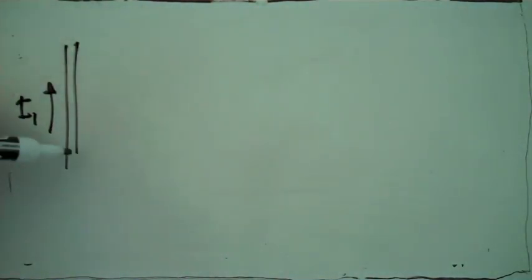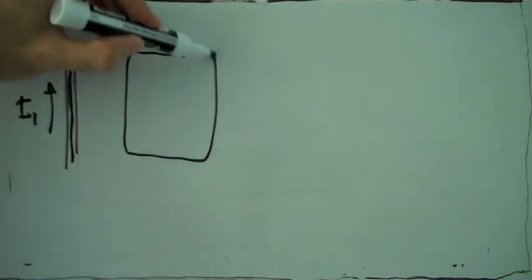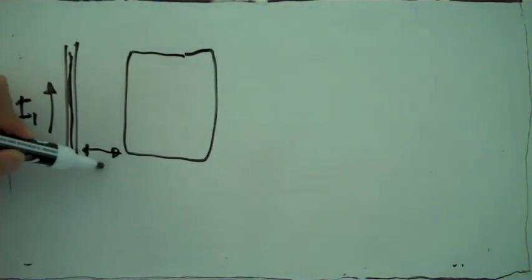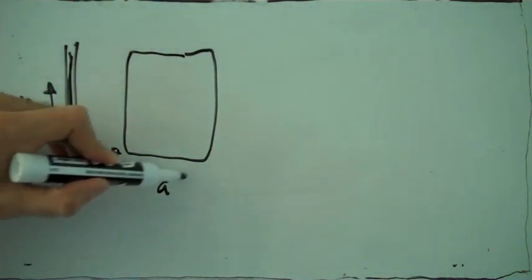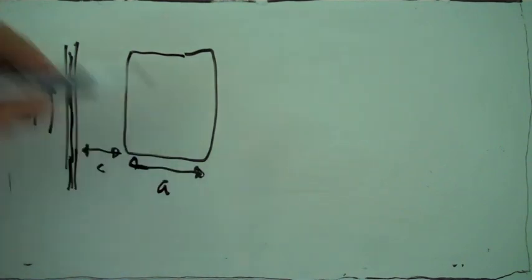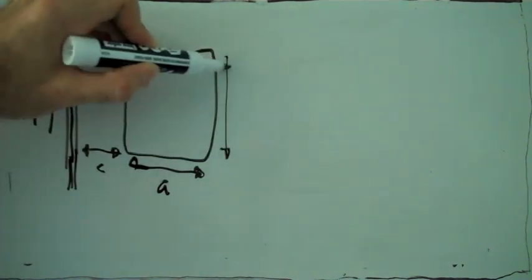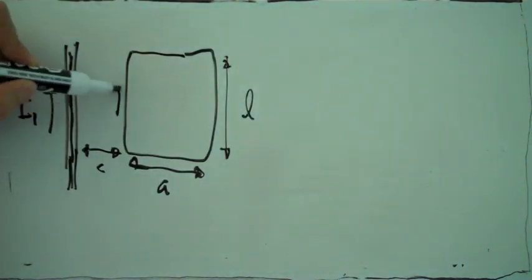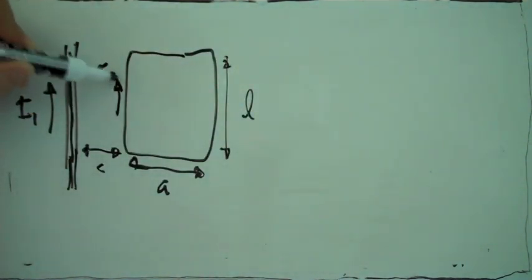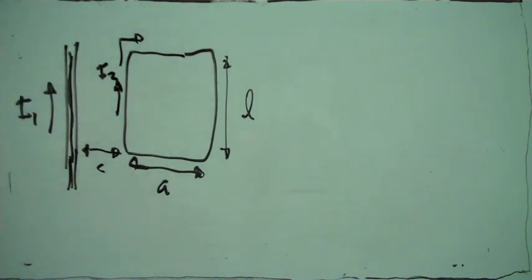Here we have a wire that has a current going upwards. The current is I1. There's a rectangular loop a distance C away from the wire. The length of this is L and the width is A. And there's a current I2 going around this rectangular loop.